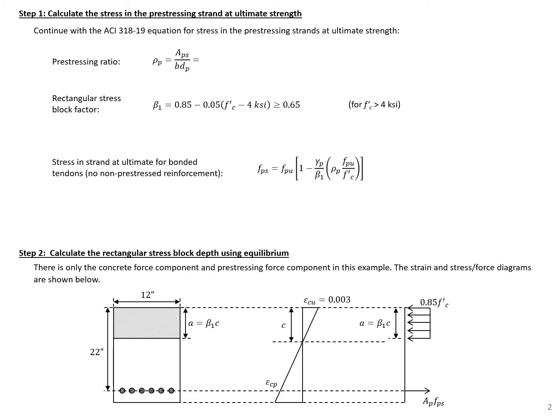We'll continue by calculating other values needed for our f sub ps equation. Next is the prestressing ratio: the total prestress area of 0.918 square inches divided by the beam width of 12 inches times the strand depth of 22 inches, giving us a ratio of 0.00348.